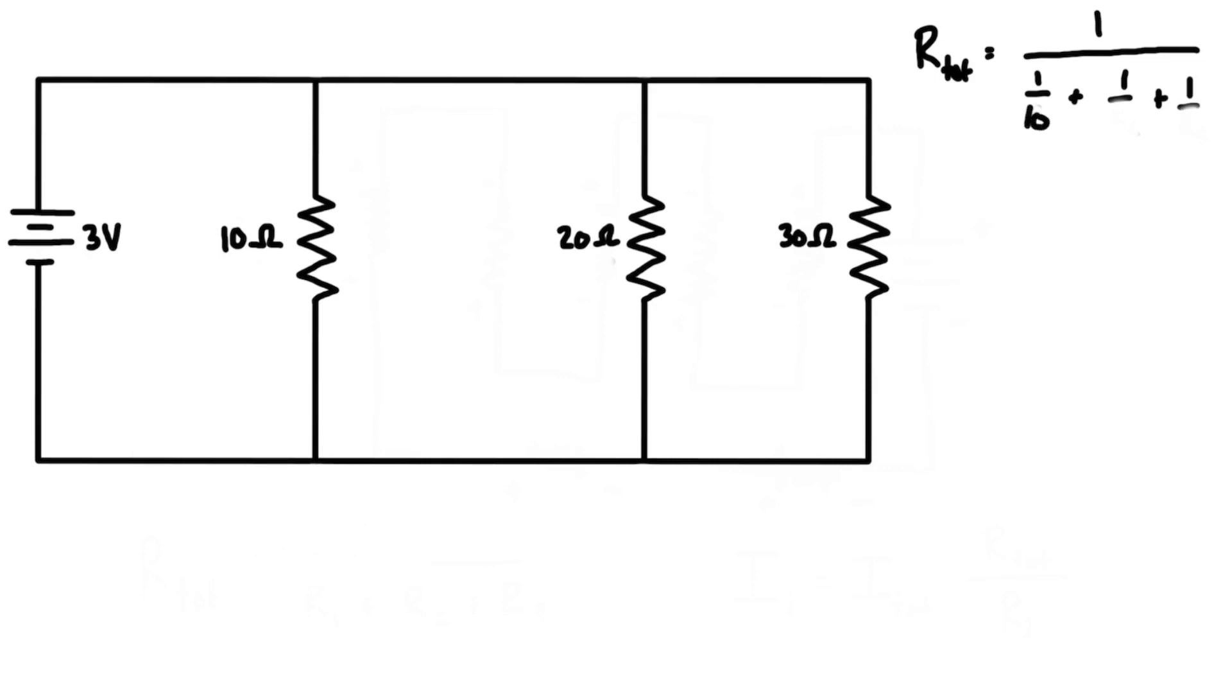We actually know what the individual resistances are because they're labeled here, so let's update this. We have 1 over 10 ohms, 1 over 20 ohms, and 1 over 30 ohms. If you crunch this in the calculator, we get 1 over 0.1833, and that reduces to R_total being 5.45 ohms. That's the total or equivalent resistance of these three parallel resistors.